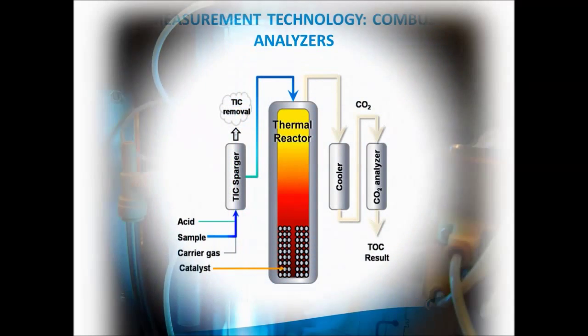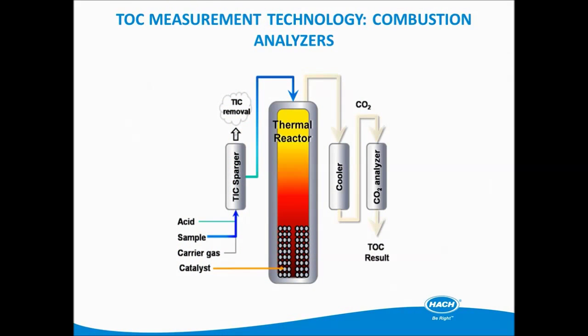This graph shows the path of a sample through a combustion or heat oxidation TOC analyzer. Instead of a UV light source, this analyzer uses a thermal reactor to oxidize the organics in a sample.